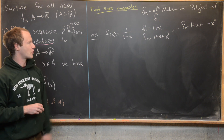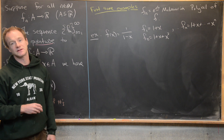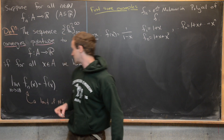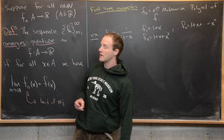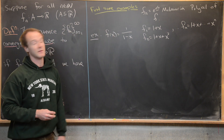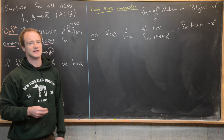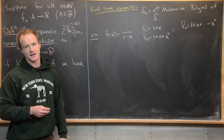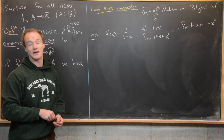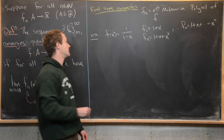Furthermore, we know that this convergence happens pointwise, at least on the interval of convergence for the Maclaurin series, which in this case is the open interval (−1, 1), not including either −1 or 1.